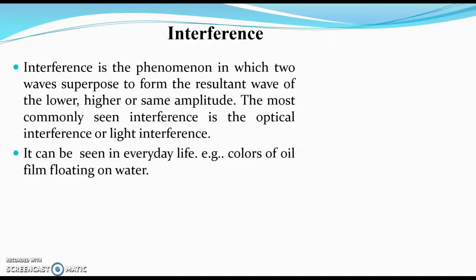Interference is defined as the phenomenon in which two waves superpose to form the resultant wave of lower, higher, or same amplitude. So three possibilities are there after superposition of two waves: either the amplitude will be lower, or it will become zero, or it will be increased to double the amplitude of a single wave, or it will have the same amplitude.